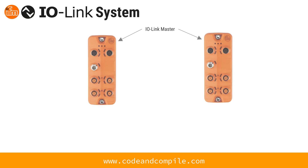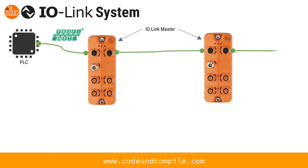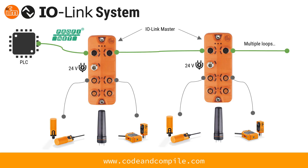Today we will look at the IO-Link master, which is the interface between your IO-Link sensors and actuators and the controller. The controller could be a PLC and the interface protocol is Profinet. This unit can be linked in series in multiple loops, is 24-volt actuated, and has four ports on the bottom for connecting sensors or actuators. Each port can be used for process values as an input or an output, but must be defined. This is the basic IO-Link system by IFM.